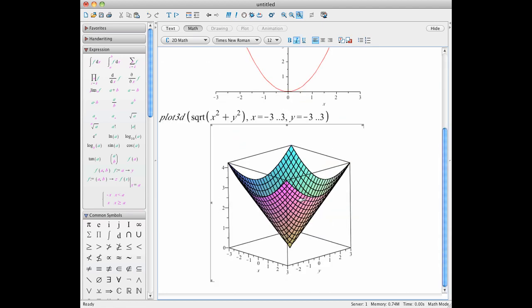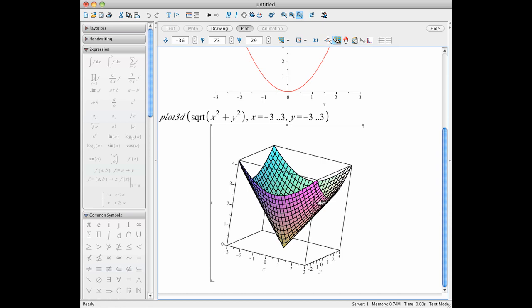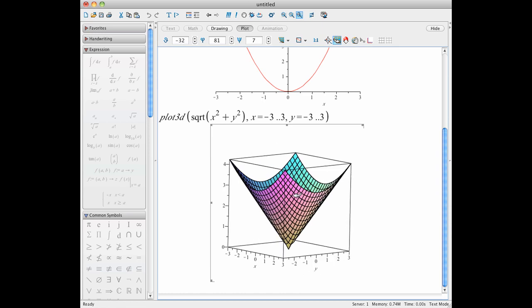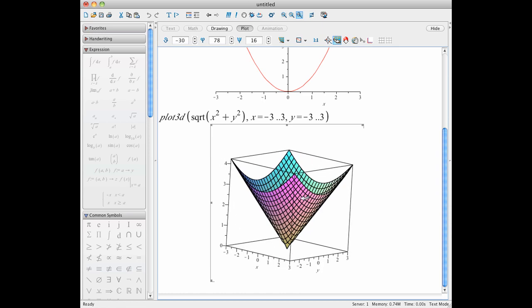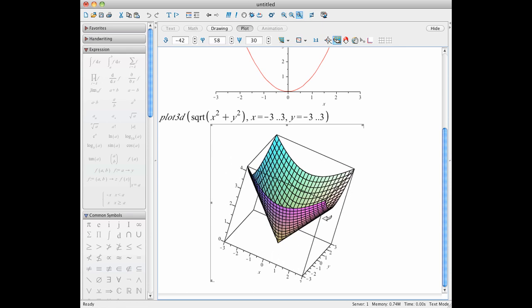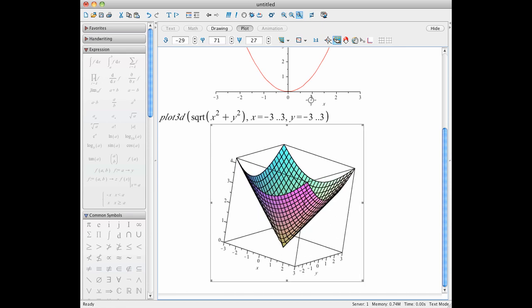And we get the ice cream cone. How cool. So one of the things you might want to be thinking about is, why are we getting an ice cream cone? So why was the last function a bowl, and why is this one a cone? And I'll leave you with that question.